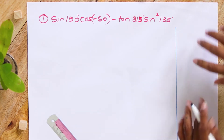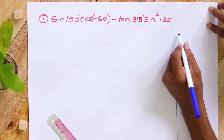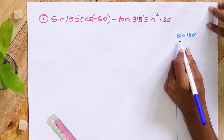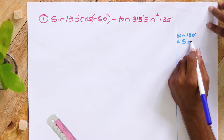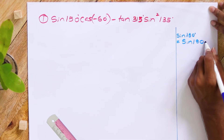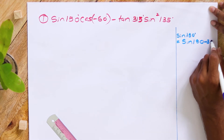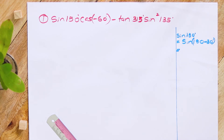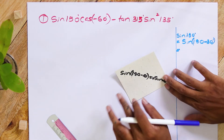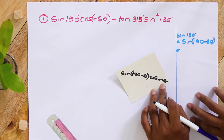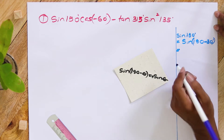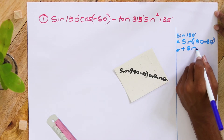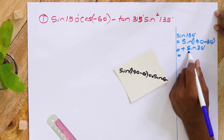Now, let's find sine 150°. We can write it as sine(180° - 30°). Since sine(180° - θ) = +sin θ, sine(180° - 30°) = +sin 30°, which is one half.